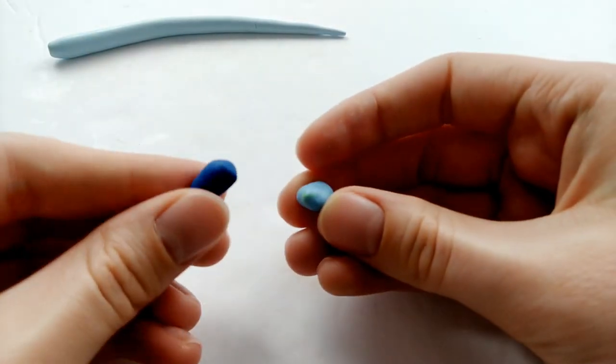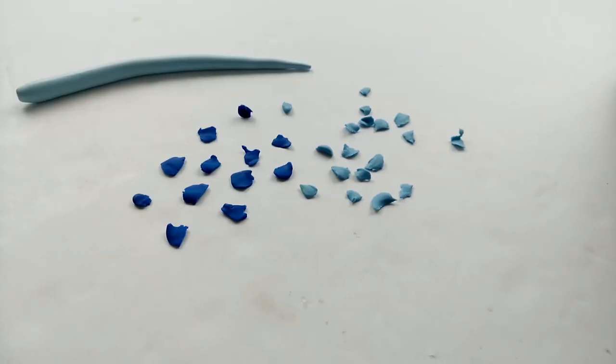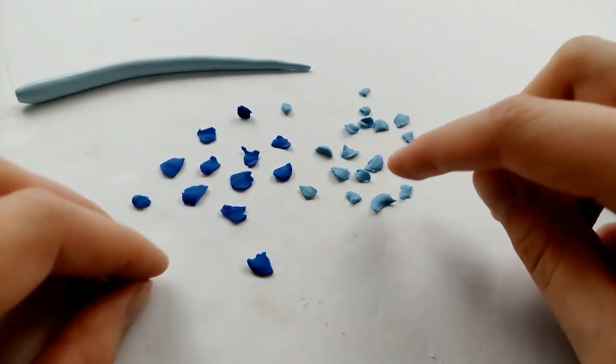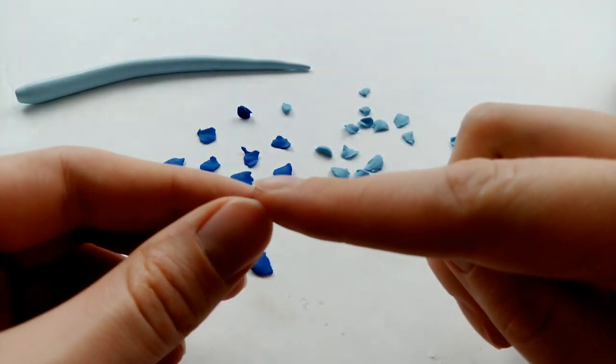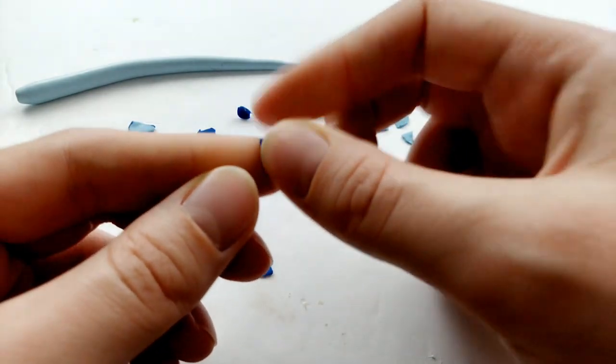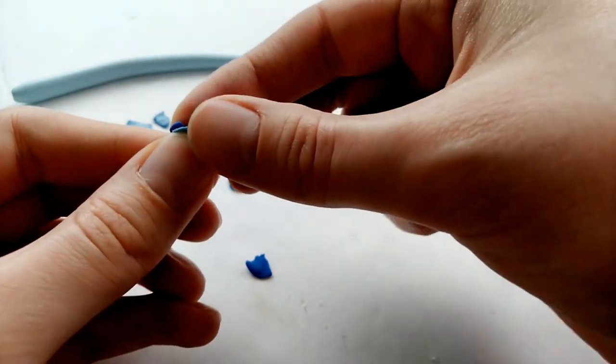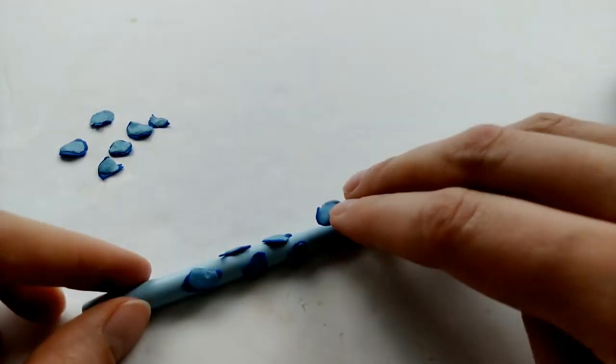We're going to take some dark and light blue clay, flatten it out a bit, and then we're going to rip it into small pieces. And once you have all your pieces, we're going to take the light clay and put it on the dark clay, and then squish them together. And you're going to do that for all of the pieces. Now this is going to end up being the snake's pattern.